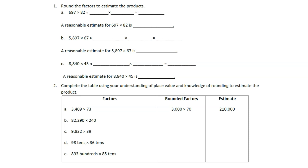Remember, basic facts — we want to get a one-digit times one-digit number, and we're going to be using our place value patterns. Let's take a look. Number one says: round the factors to estimate the product. We always want to round to whatever our highest place value digit is in each factor. For (a), our first factor has a six in the hundreds place and an eight in the tens place of our second factor.